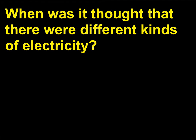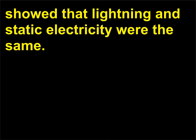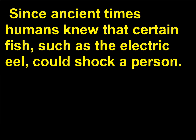When was it thought that there were different kinds of electricity? As you have seen, Benjamin Franklin's kite experiment showed that lightning and static electricity were the same. Since ancient times humans knew that certain fish, such as the electric eel, could shock a person.